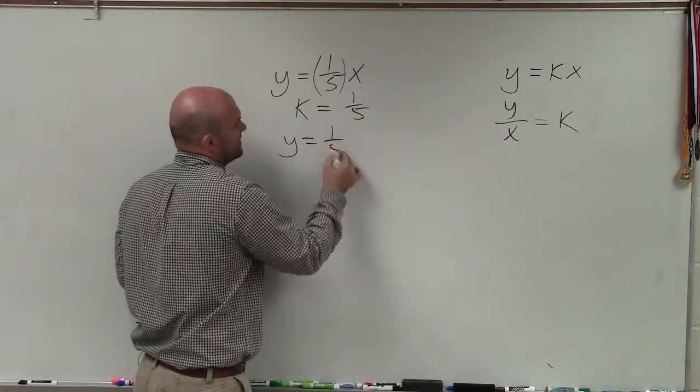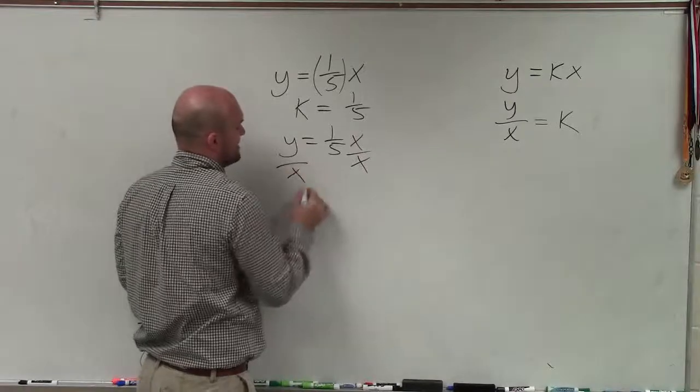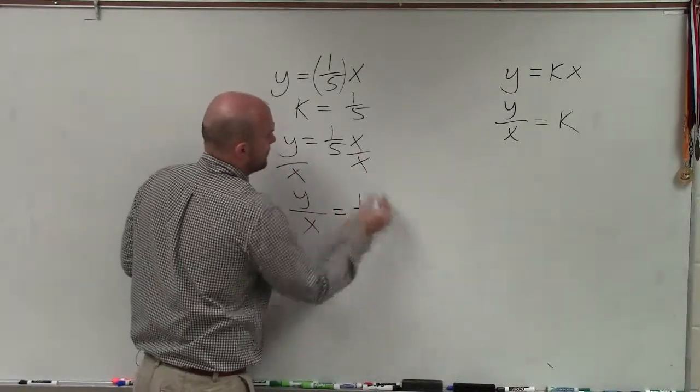I could also rewrite that in my other format just by dividing by x on both sides. So I have y over x is equal to 1 fifth.